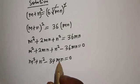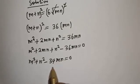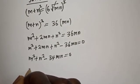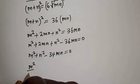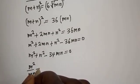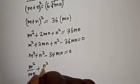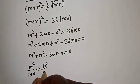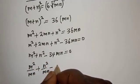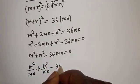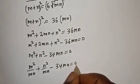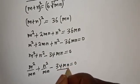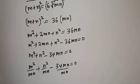Let's divide both sides of this equation by mn. We get m squared over mn plus n squared over mn minus 34mn over mn is equal to zero over mn.